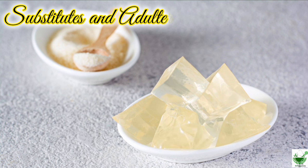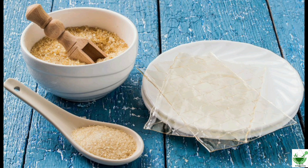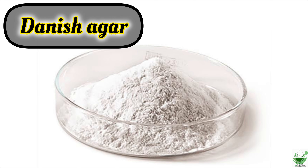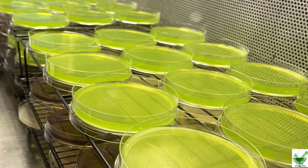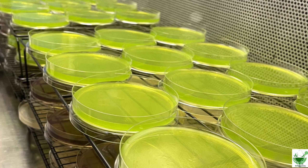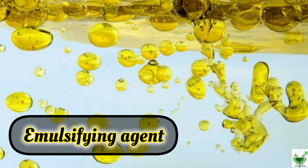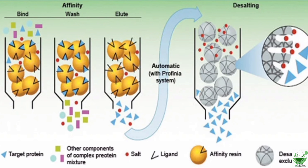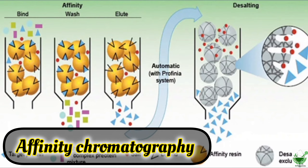Substituents and adulterants: Some of the common adulterants present in agar are gelatin and Danish agar. Uses: Agar is used in the preparation of culture media, as an emulsifying agent, and in the treatment of chronic constipation. Both agar and agarose find extensive use in affinity chromatography.